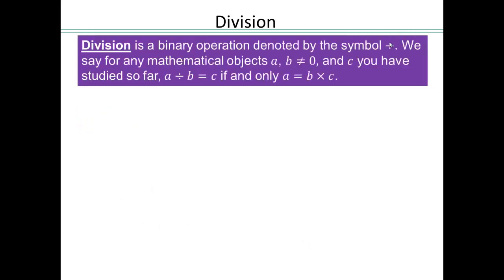Division is a binary operation, represented by this bar with two dots — that's the symbol we use for division. It's defined as follows: for any three mathematical objects a, b, and c, where b is not 0, a divided by b equals c if and only if a is the product of b and c.